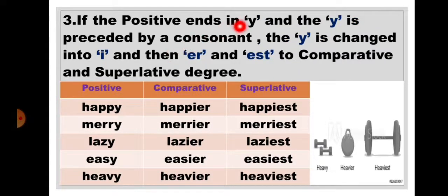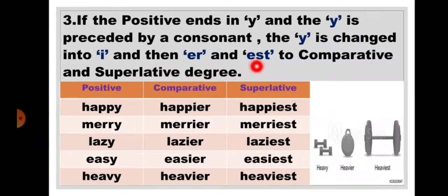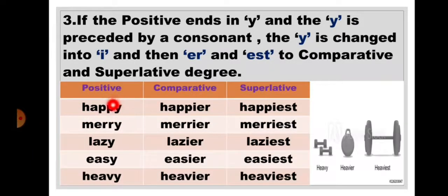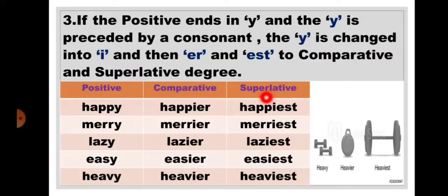Rule 3: If the positive ends in Y and the Y is preceded by a consonant, the Y is changed into I and then ER and EST are added for the comparative and superlative degree. For example: happy — the word ends with Y and before that it has a consonant P. We replace Y with I and add ER to get happier, and replace Y with I and add EST to get happiest.